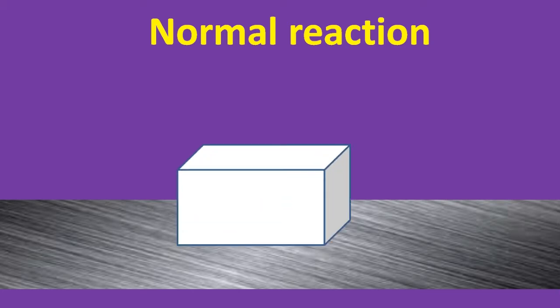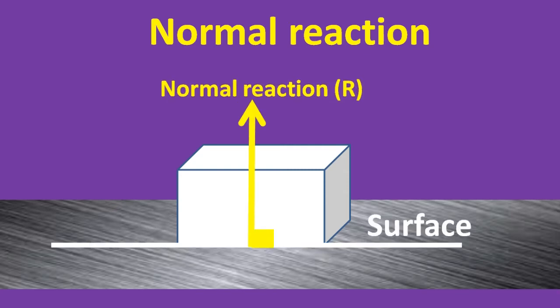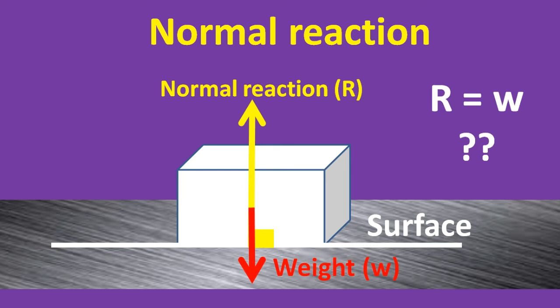If we have a box or any other object on a surface like that, then the normal reaction is the force which they exert on each other in a direction that is perpendicular to their surface of contact. Okay. For the case we have here, it is the weight of the box or the object. Oh, I see.